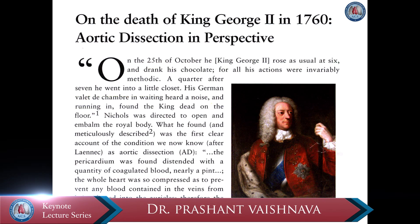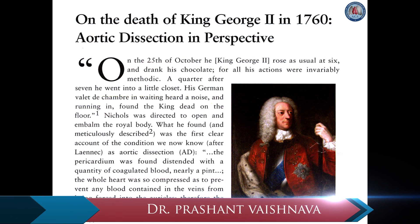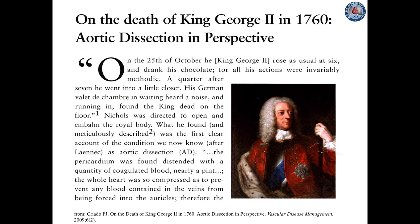The catastrophic cardiovascular condition of aortic dissection was further described in detail by Frank Nichols in his necropsy report of King George II. The following was written: On the 25th of October, King George II rose as usual at six and drank his chocolate, for all his actions were invariably methodical. A quarter after seven, he went into a little closet. His German valet de chambre, waiting, heard a noise, and running in, found the king dead on the floor. Nichols was directed to open and embalm the royal body. What he found, and meticulously described, was a first clear account of the condition we now know as aortic dissection.